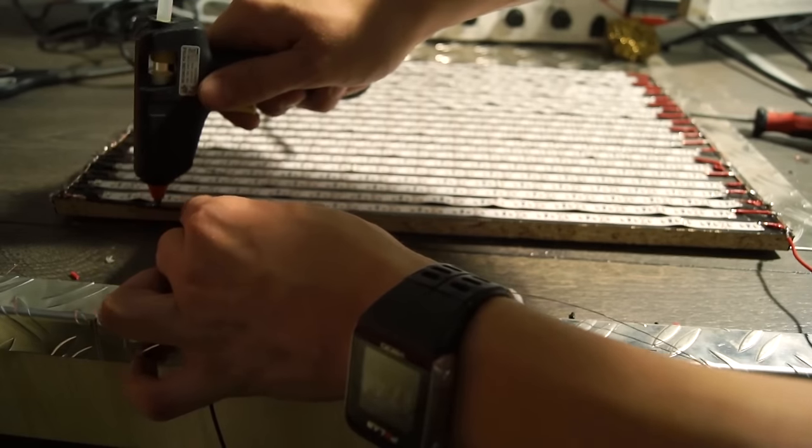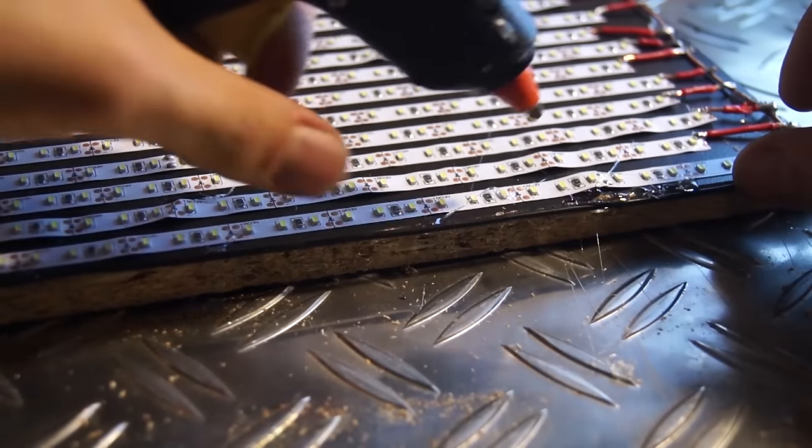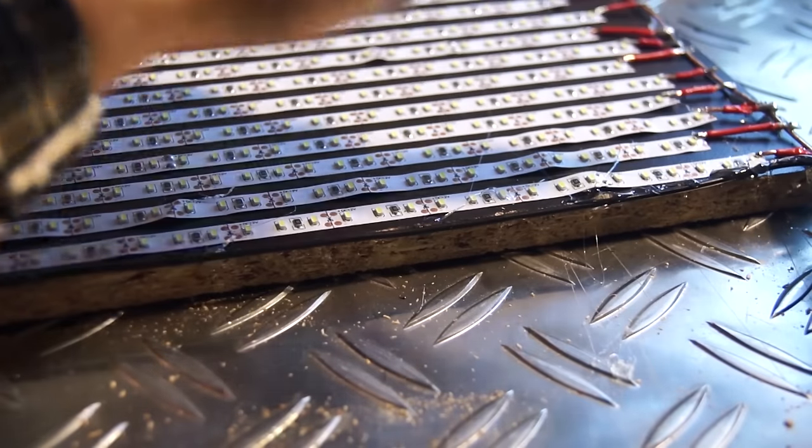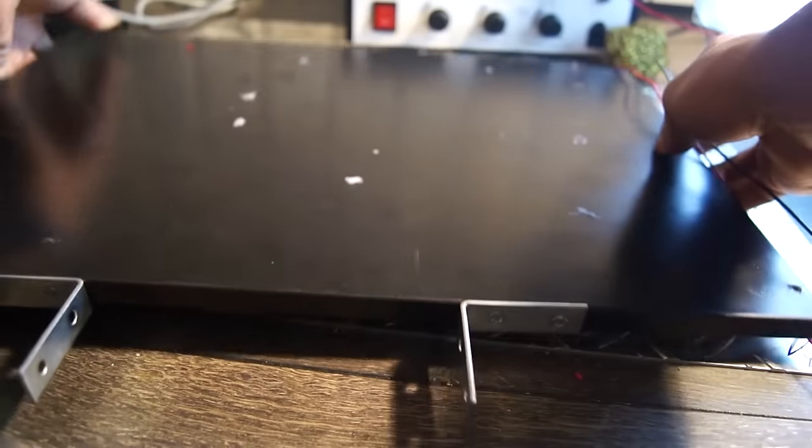After soldering some longer wires at the edges of the light I grouped them together on the right side of the board, making sure the wires stayed in place using, yet again, hot glue.